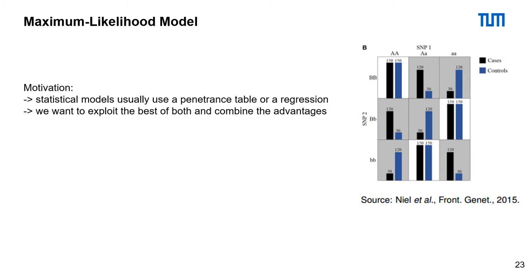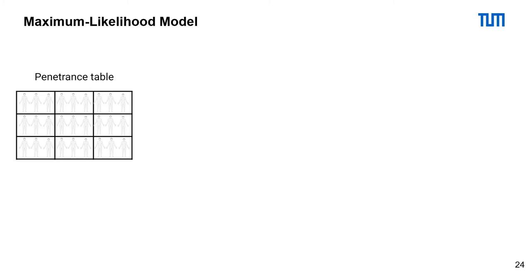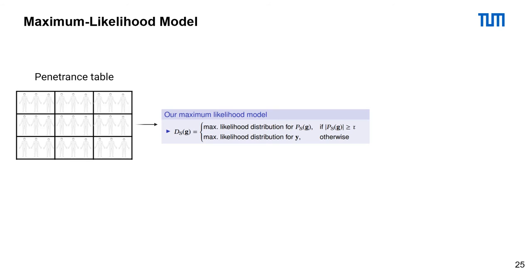The maximum likelihood model uses a standard penetrance table. A penetrance table contains the probability of expressing the phenotype under study given a particular allele combination. Then we start calculating. First, we test if enough samples are inside a cell. For this, we train the hyperparameter tau, which we finally set to 20.